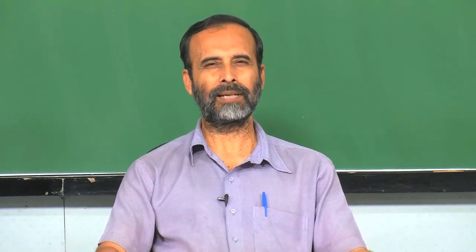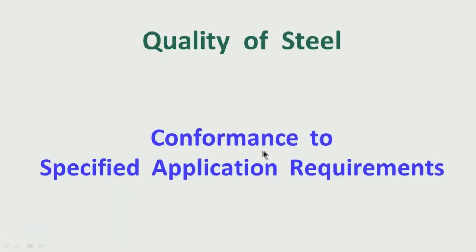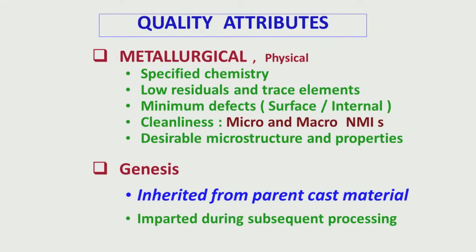In the last session, all of you will remember that I covered what is meant by quality of steel — the basic understanding — and I mentioned it is basically conformance to specified application requirements. Then I told what are the measures, the attributes by which we can measure whether a steel is having good quality or not, whether a component will perform to the desired expectation or not. There I mentioned the metallurgical quality attributes which are being covered in the particular course.